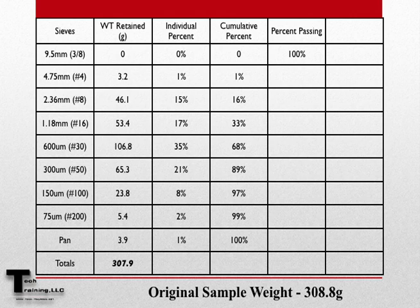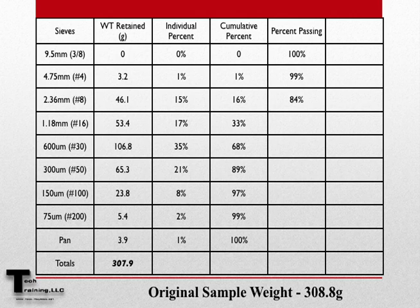Percent passing is achieved by simply subtracting from 100 the cumulative percent retained. As an example, if 0% of our material were retained on the 9.5mm sieve, then 100% of that material must have passed. If on the 4.75mm sieve, 1% of the material were retained, then 99% must have passed. Let's now talk about specification.